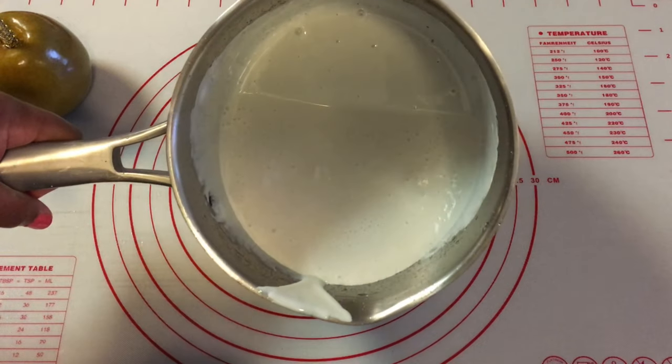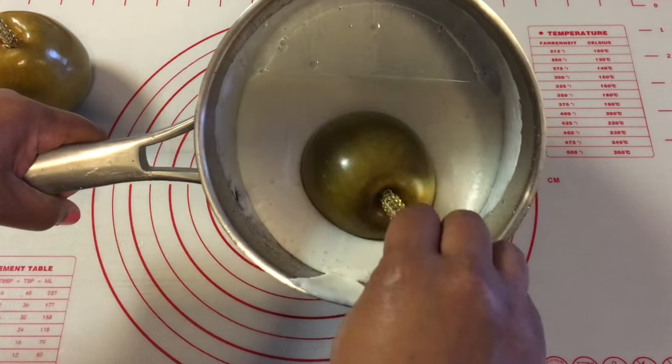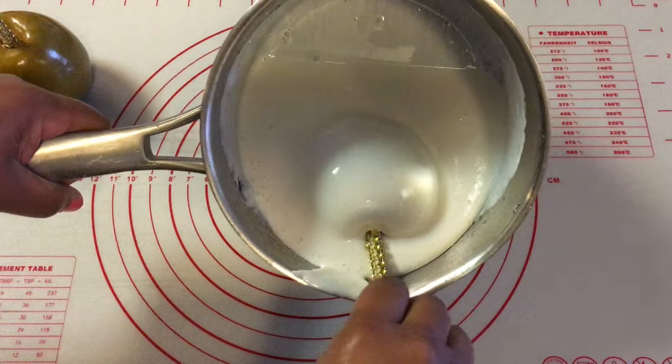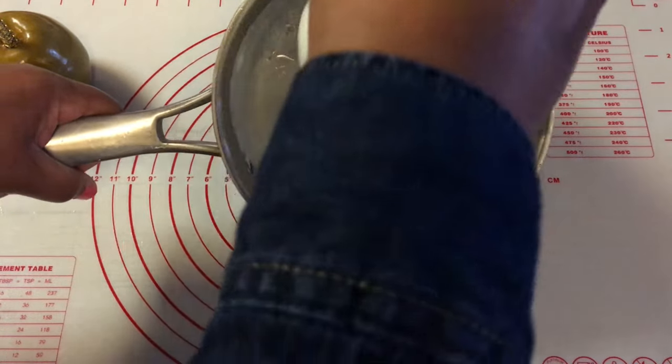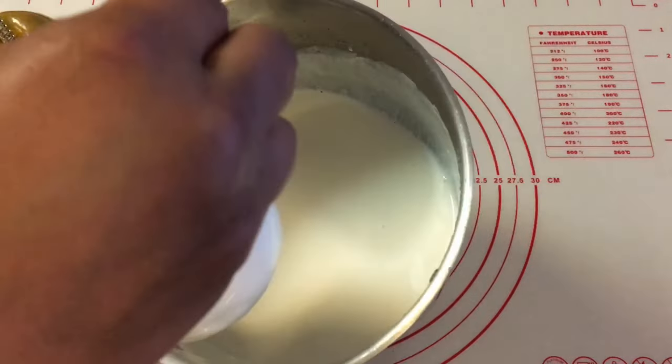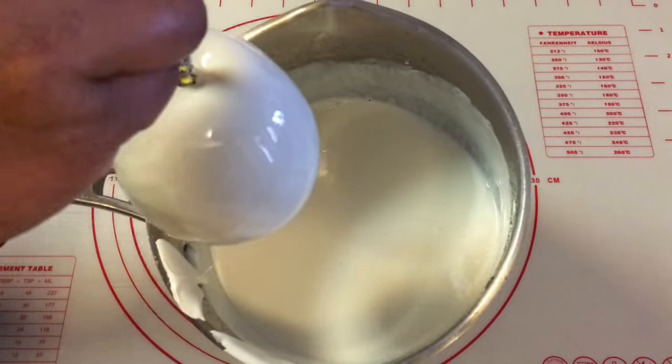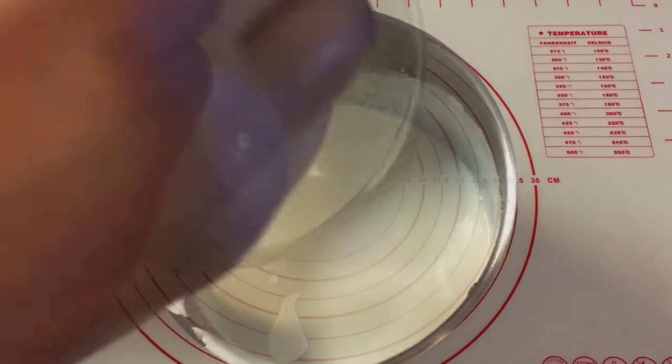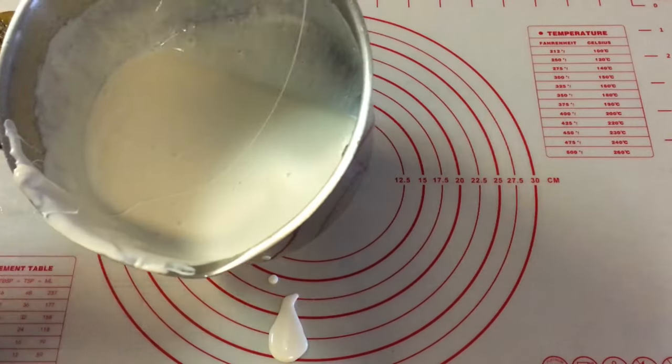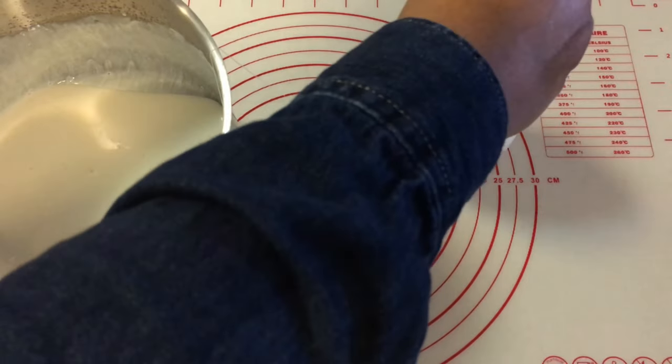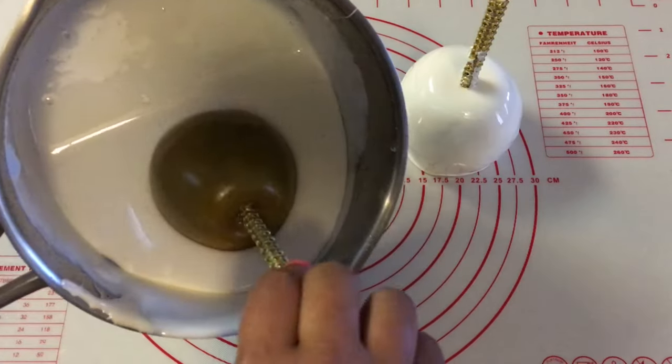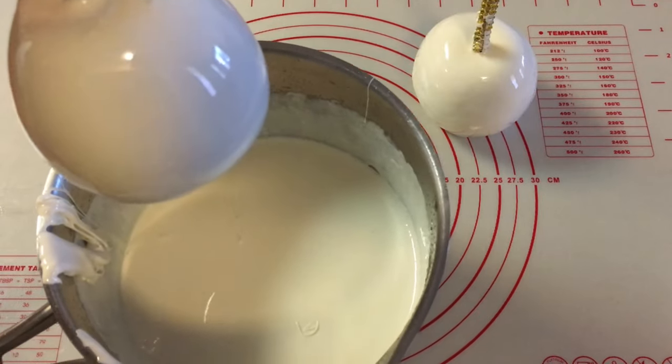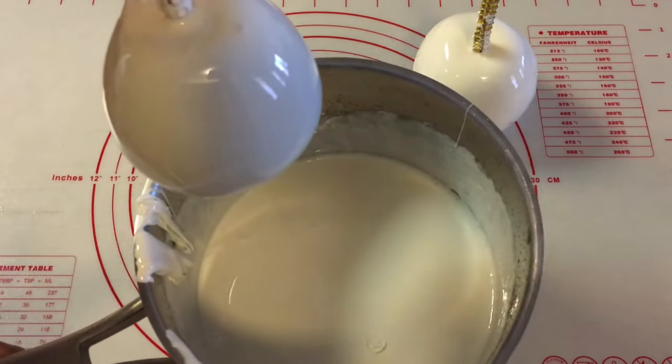Okay, so we're going to tilt the pot. I'm going to dip my apple. And then I'm going to scrape my apple on the side of the pot. I'm going to dip my apple and then scrape.